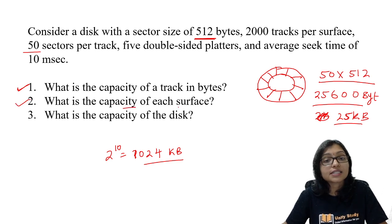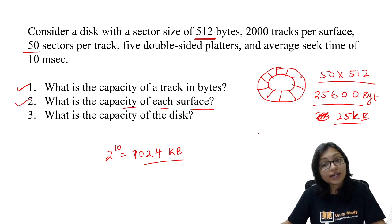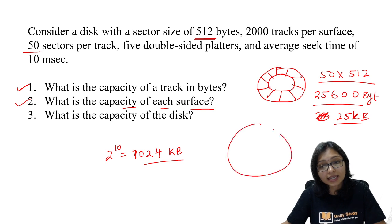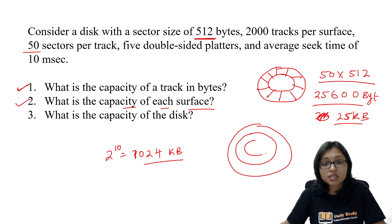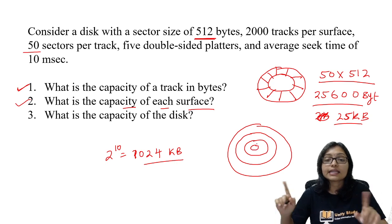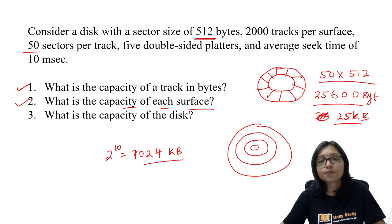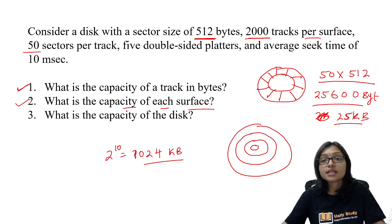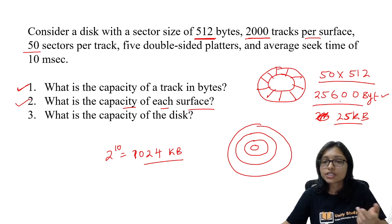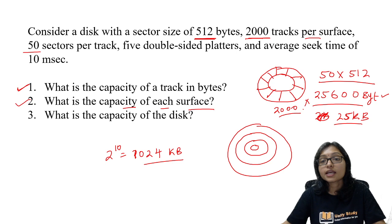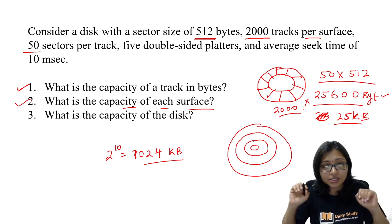Next: what is the capacity of each surface? A surface is the collection of tracks. There are 2000 tracks per surface. We just calculated the track size, so if we multiply 25,600 by 2000, we get the surface capacity.